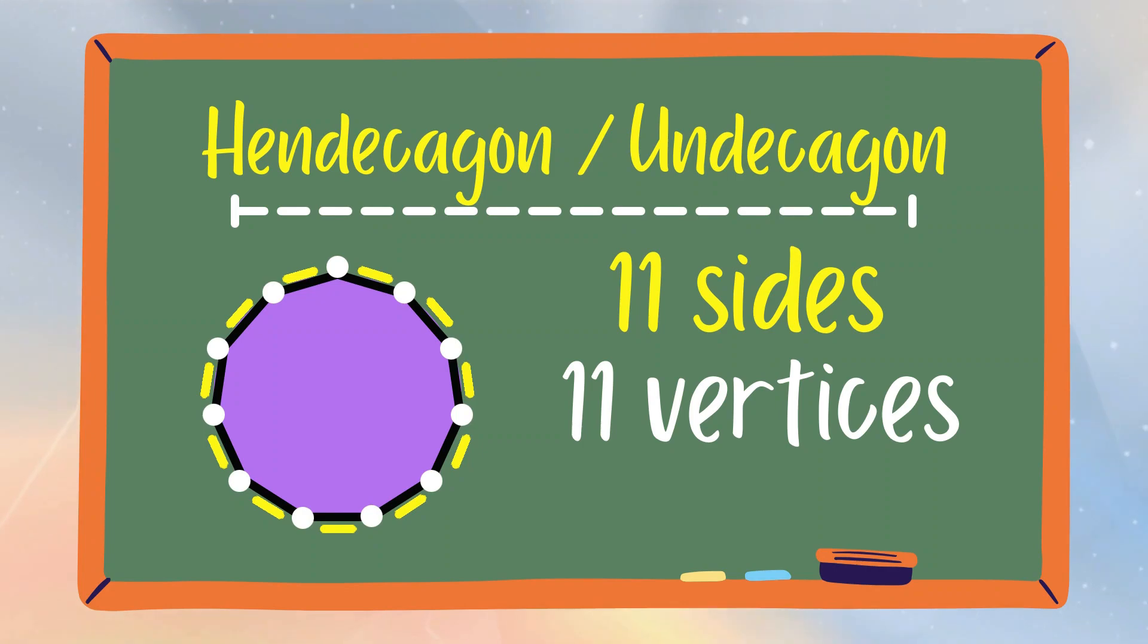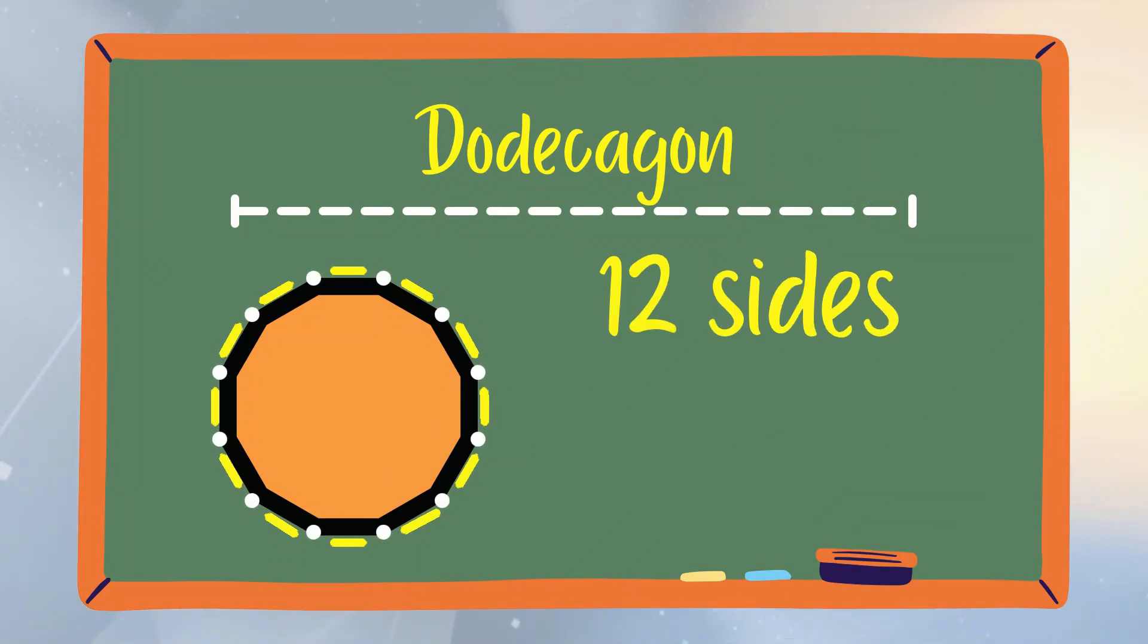Hendecagon or undecagon is a polygon that has 11 sides and 11 vertices. Dodecagon is a polygon that has 12 sides and 12 vertices.